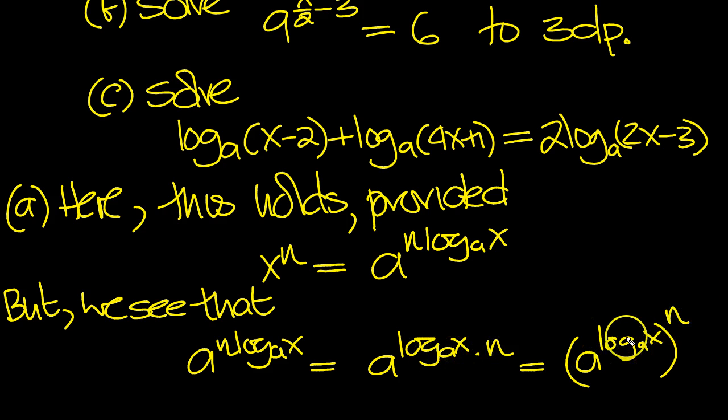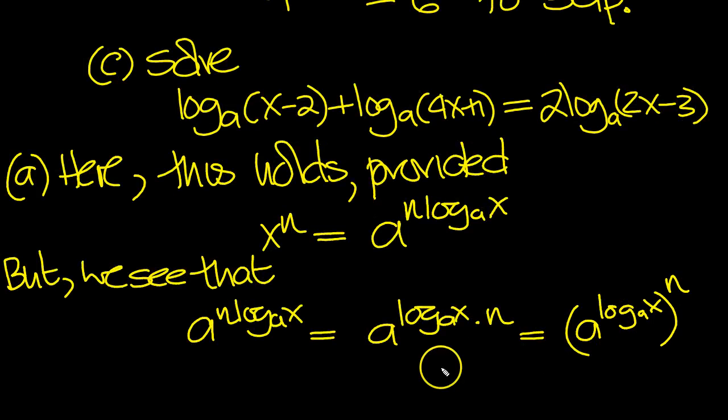Which is what we've got here, using the power power rule for indices. And a log a of x is just x, isn't it? So in other words, we've got x to the n. So that's part a.